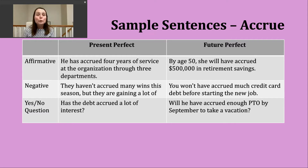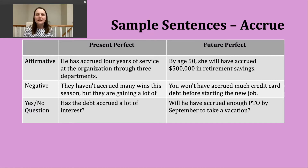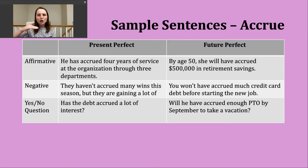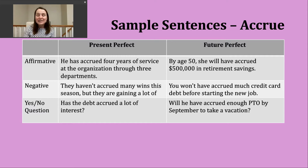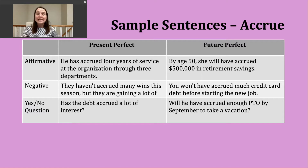Here's an affirmative example: 'He has accrued four years of service at the organization through three departments.' This sentence ties back to those first two definitions — accumulating, building up — here it's something increasing over time: how long he has served an organization.